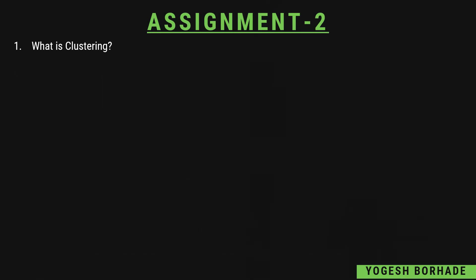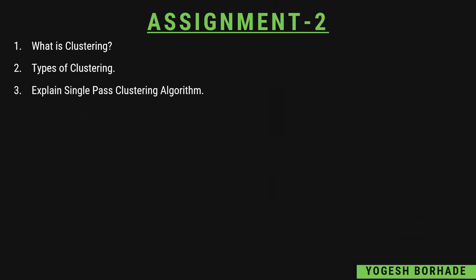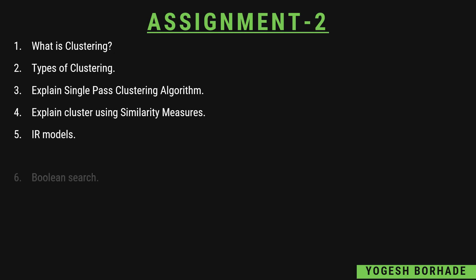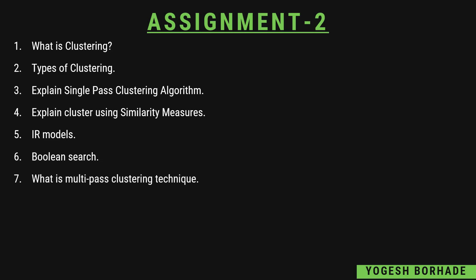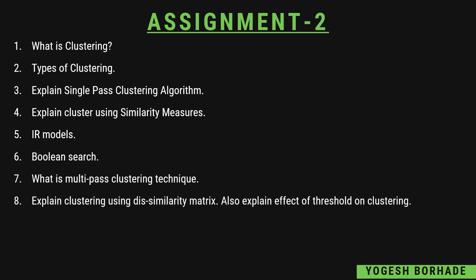The second assignment is based on clustering. They can ask what is clustering, what are the different types of clustering — we have the single pass algorithm and the single link algorithm. Prepare those clustering algorithms, and explain the single pass clustering algorithm because you have used this in your practicals. Prepare an example for this algorithm as well. Then explain clustering using similarity measures, what are IR models — Boolean and probabilistic — and what is Boolean search. Also prepare what is multiple pass clustering technique.